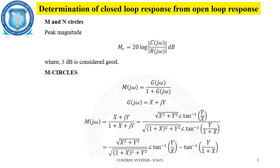The peak magnitude MR value is calculated in decibels as 20 log of the closed loop transfer function. Let us consider the closed loop transfer function M(jω) = G(jω) / (1 + G(jω)), where H(jω), the feedback, is considered to be unity.